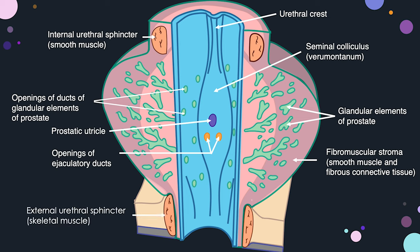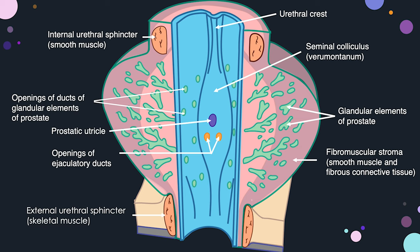The external urethral sphincter is made up of skeletal muscle and is controlled by the somatic nervous system. The nerve that controls the external urethral sphincter is known as the pudendal nerve.